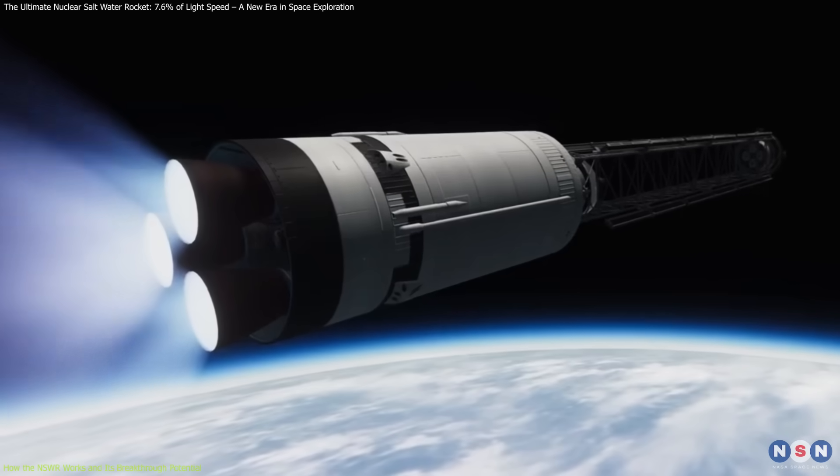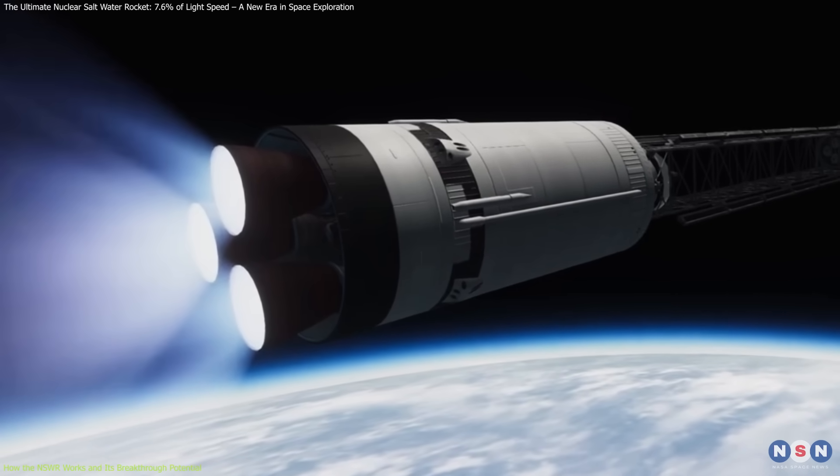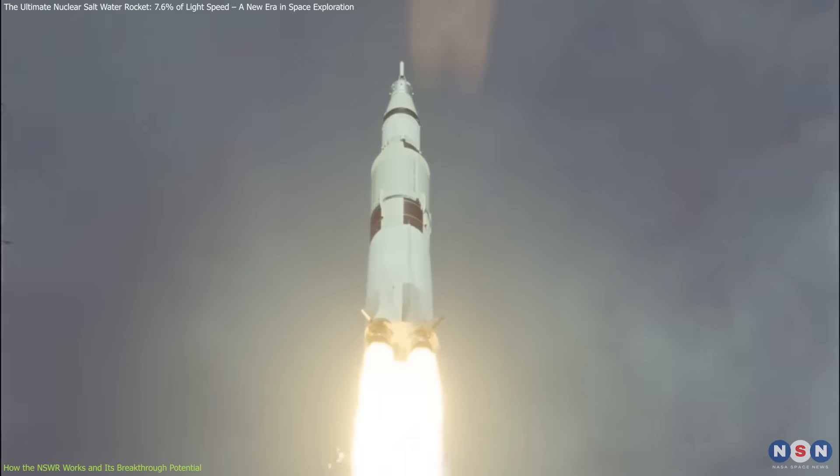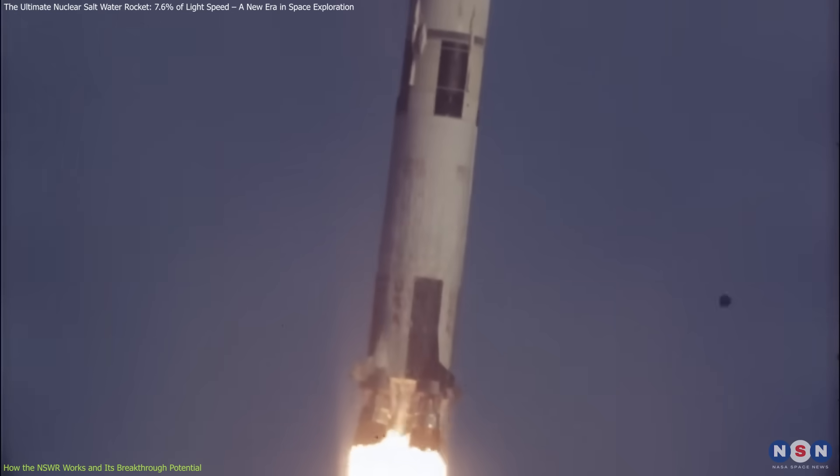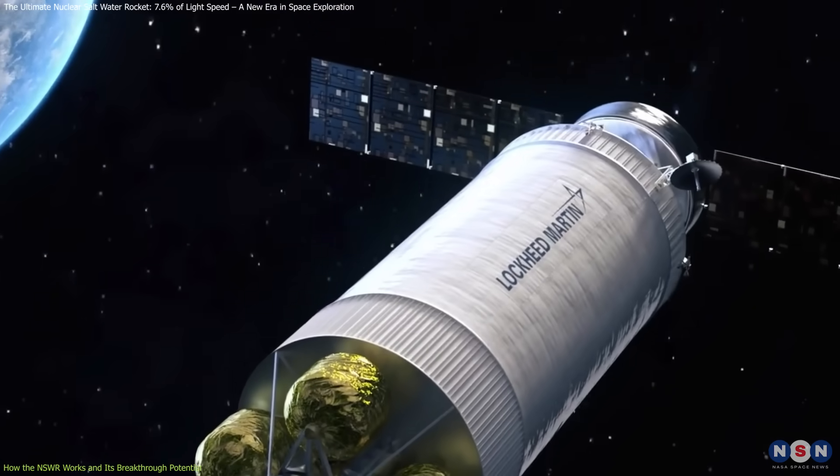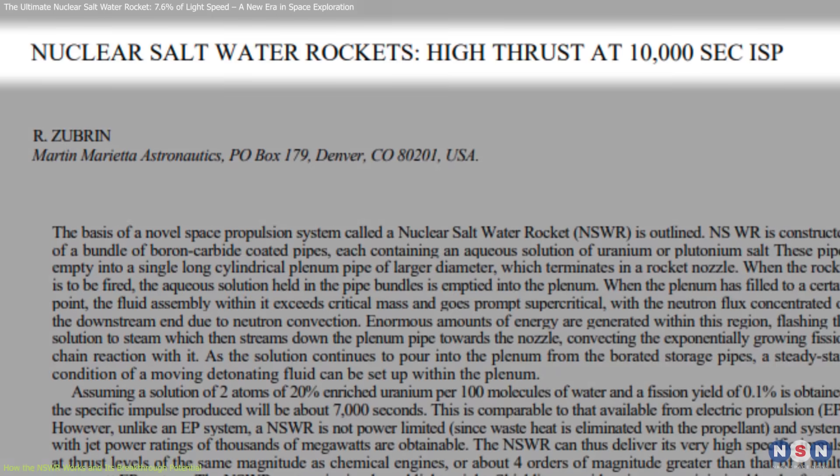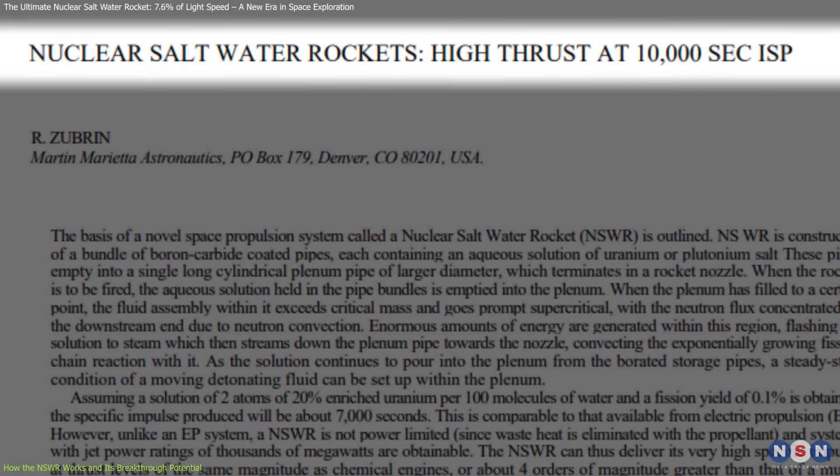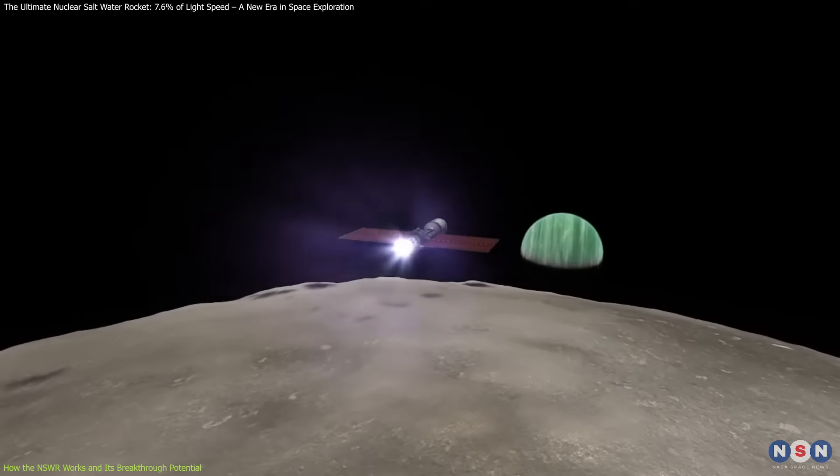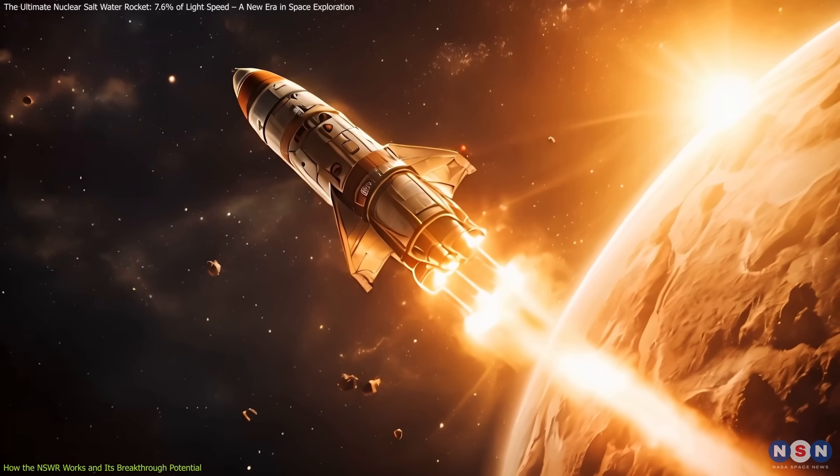What makes this technology extraordinary is its specific impulse, a measure of propulsion efficiency. Traditional chemical rockets, like the Saturn V, have a specific impulse of about 450 seconds, while nuclear thermal rockets can achieve around 900 seconds. However, this rocket boasts a specific impulse exceeding 10,000 seconds, meaning it can sustain high thrust acceleration for extended periods, something no other propulsion system can offer.